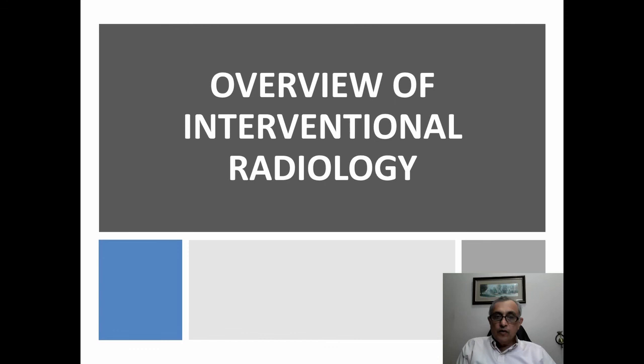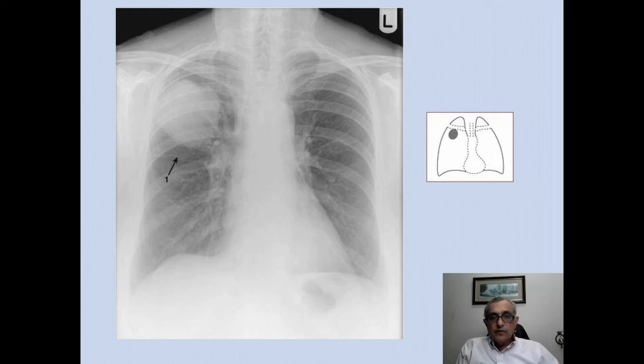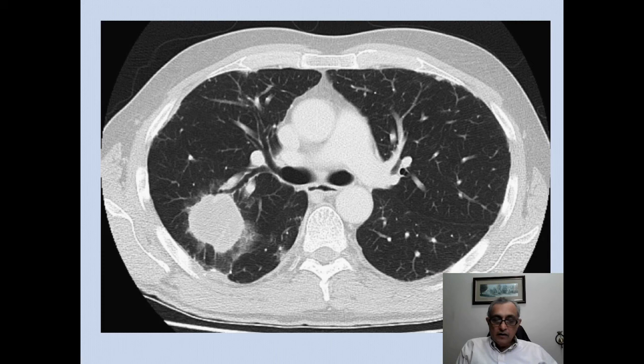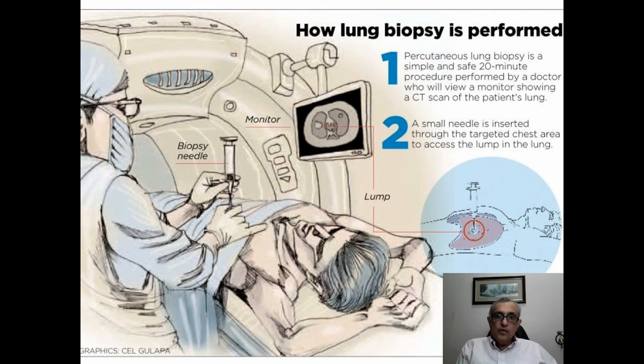Let's look at what interventional radiology has to offer. The best way to illustrate this is to follow a patient who comes in with cough and chest pain, has a chest radiograph showing a mass in the right upper lobe, and then a CT scan which clearly identifies the mass. We don't know the histology — it could be benign lung tumors, lung cancer, lung abscess, or lipoid pneumonia — so a lung biopsy is needed.